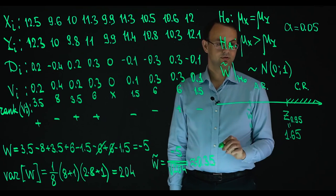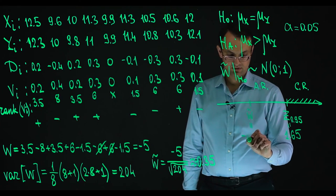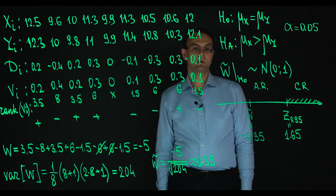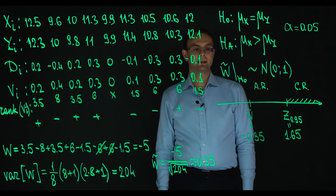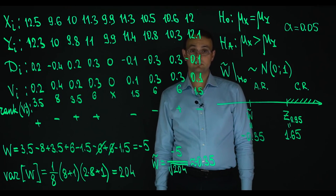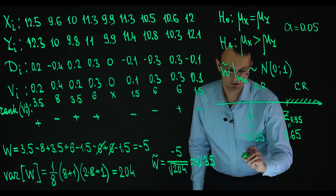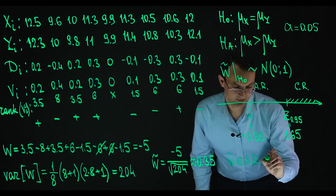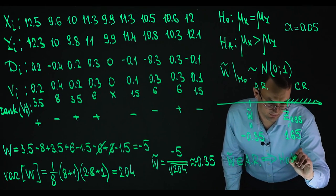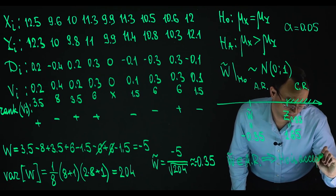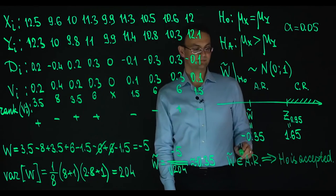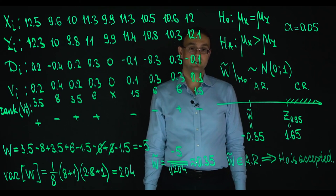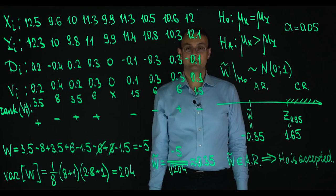And so W tilde is equal to minus 0.35. So the same, almost the same result. I see that the test statistic is in acceptance region. So W tilde belongs to the acceptance region. So that means that H0 is accepted. So the same result as it was when we used the student's t-test to solve this problem.